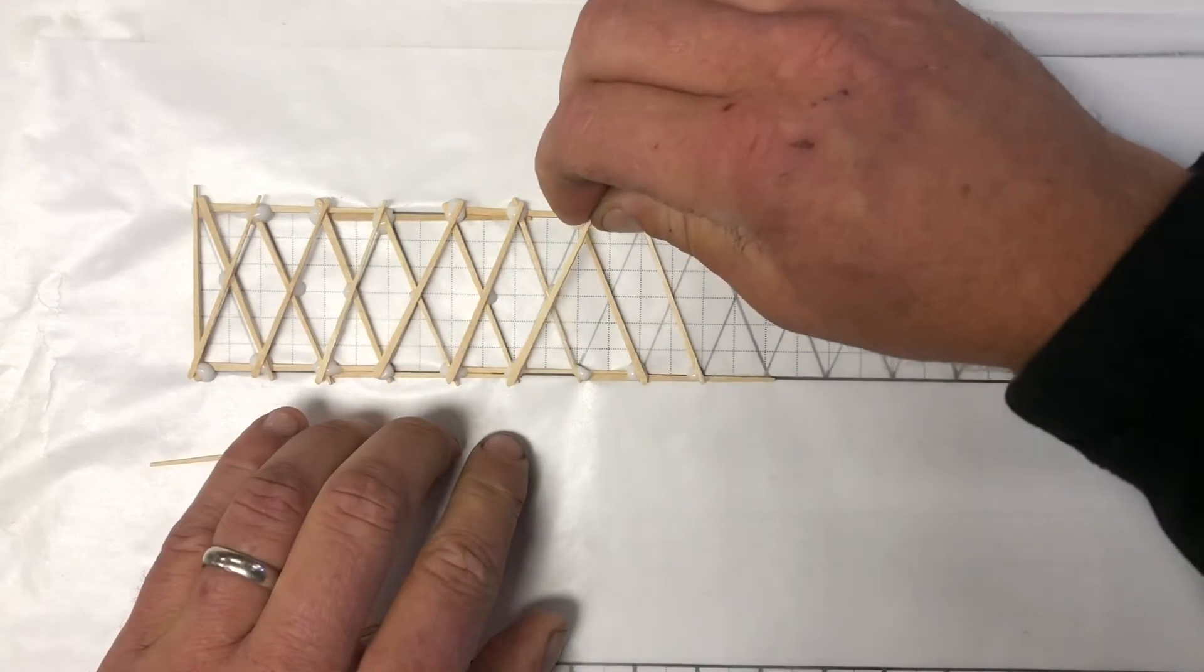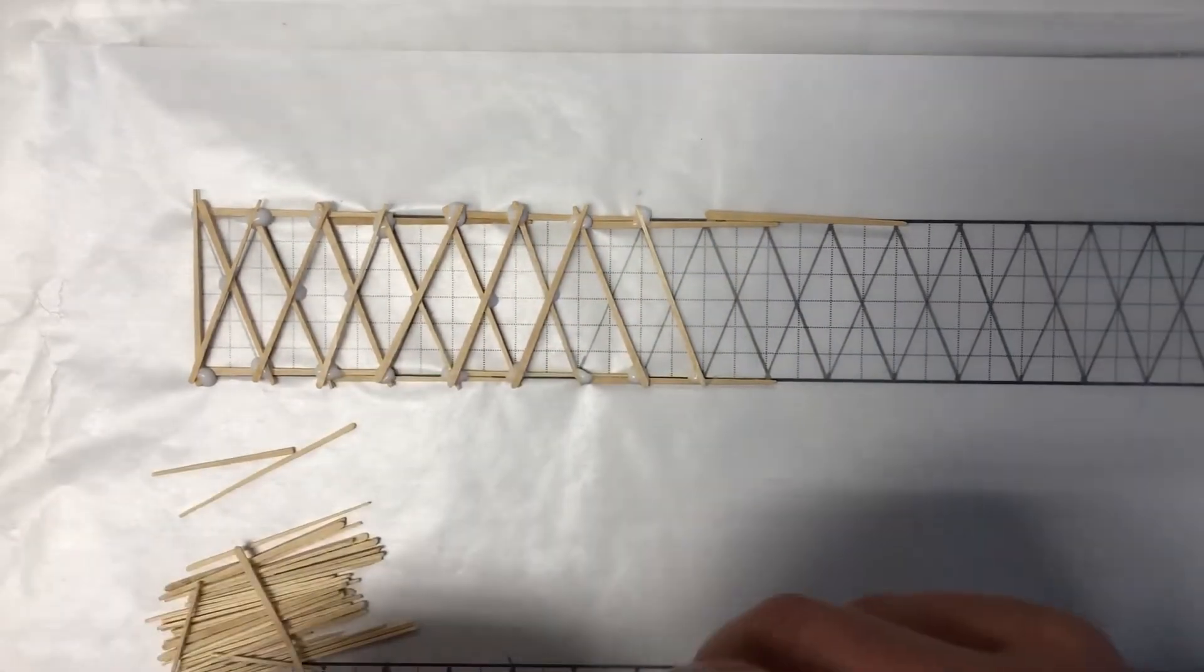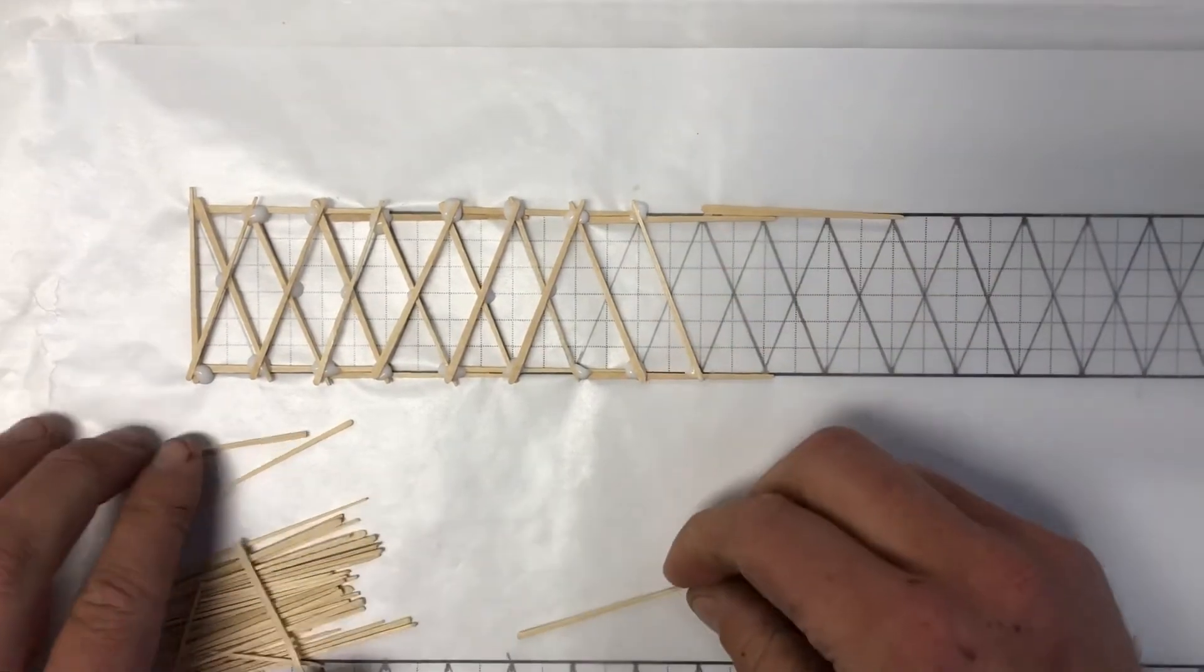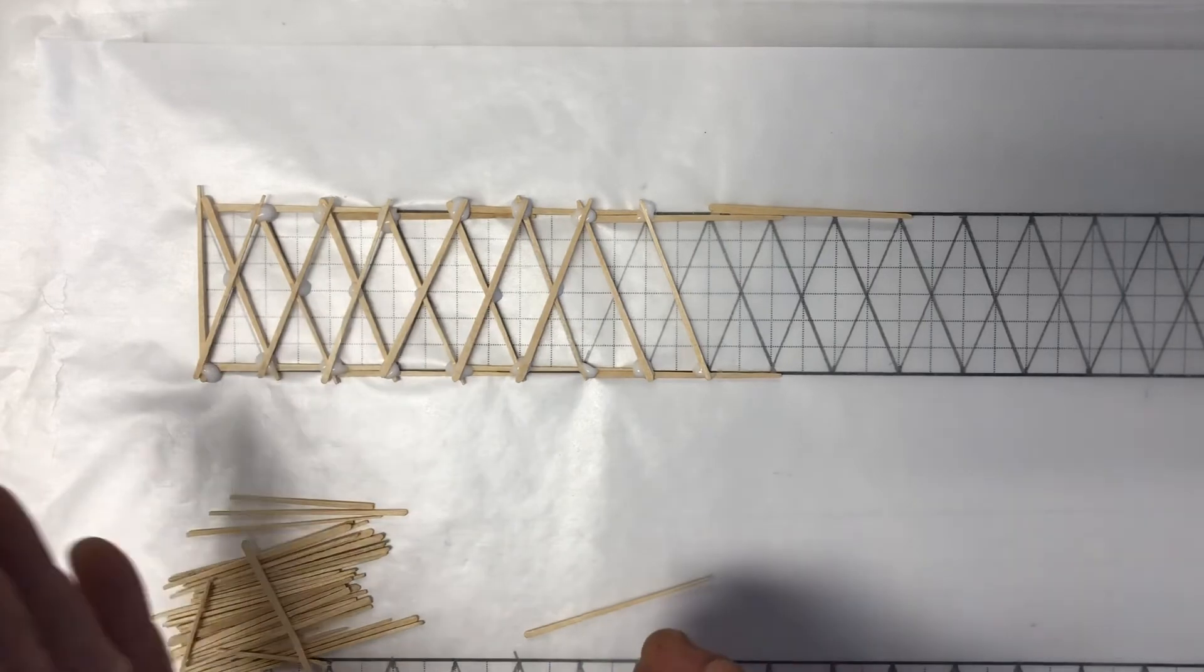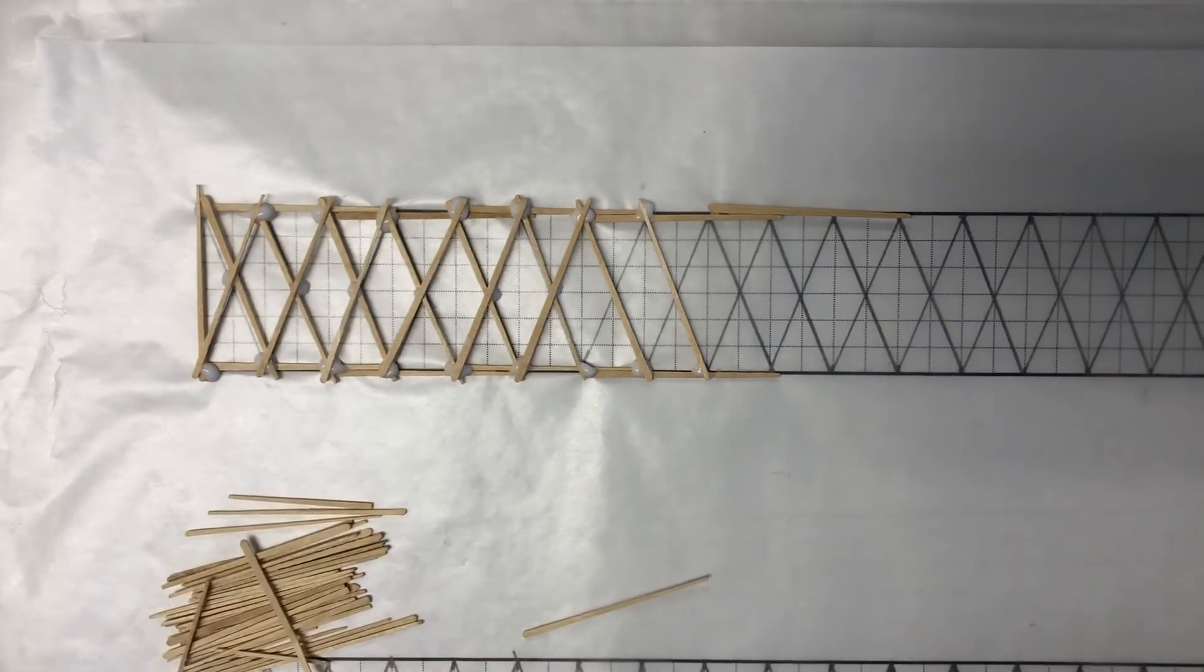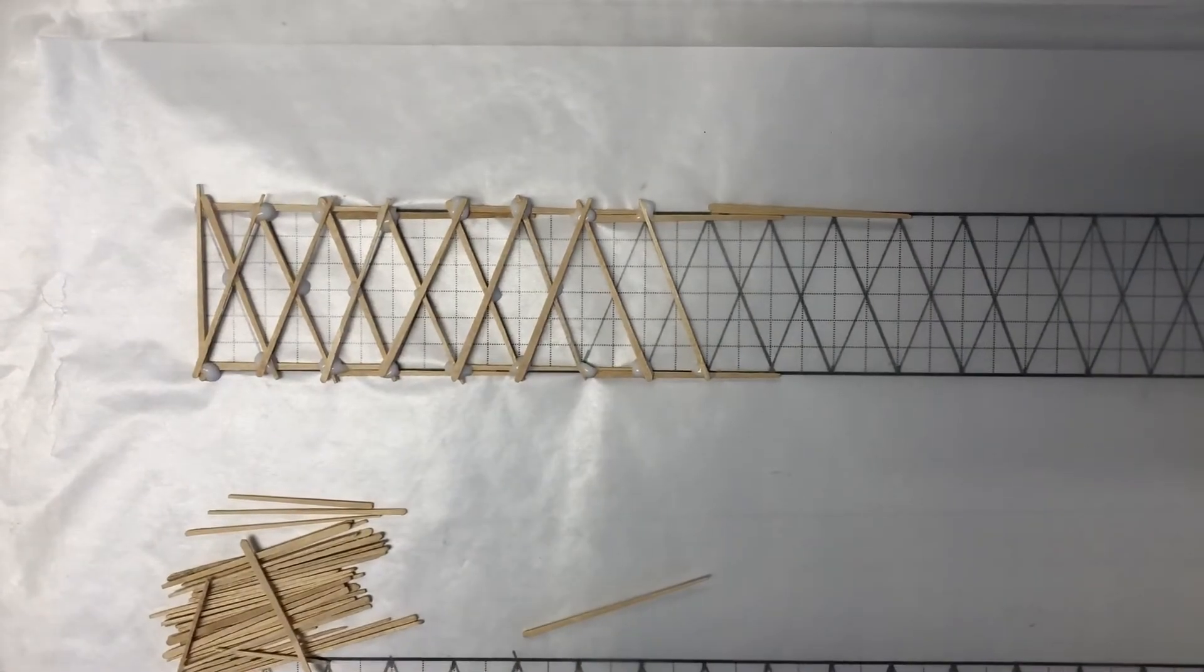So you are going to go through and repeat this pattern. You're going to do horizontals, diagonals, and diagonals the other way. If you did, let's say, a warren with vertical supports, you would put a vertical in there somewhere. But it's the repetition of these patterns that you go ahead and build.